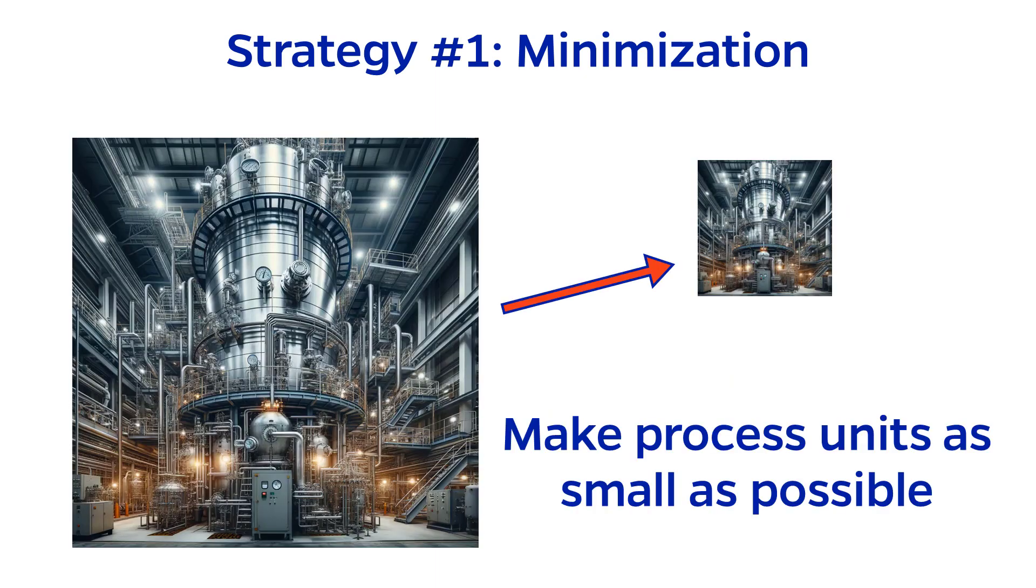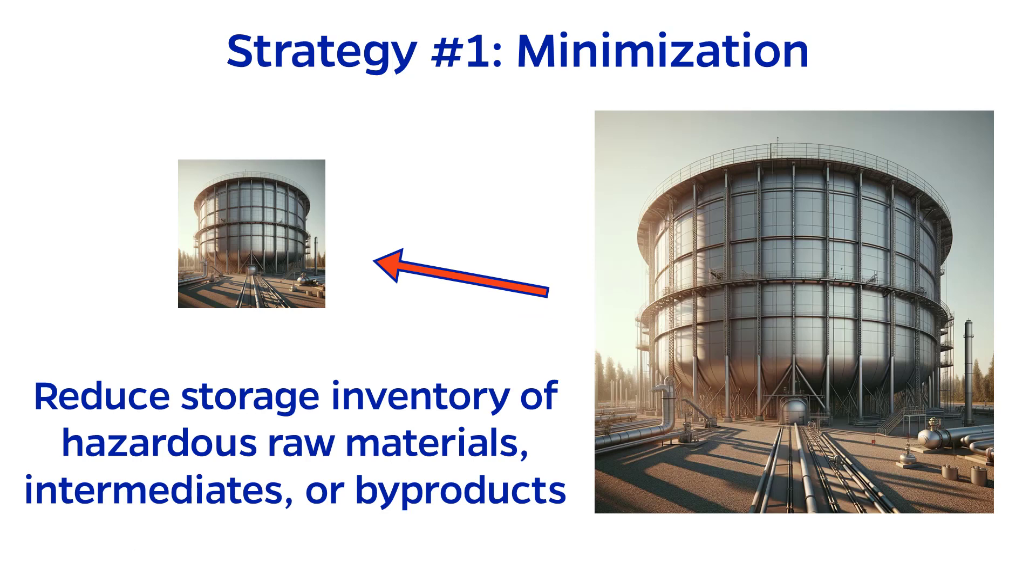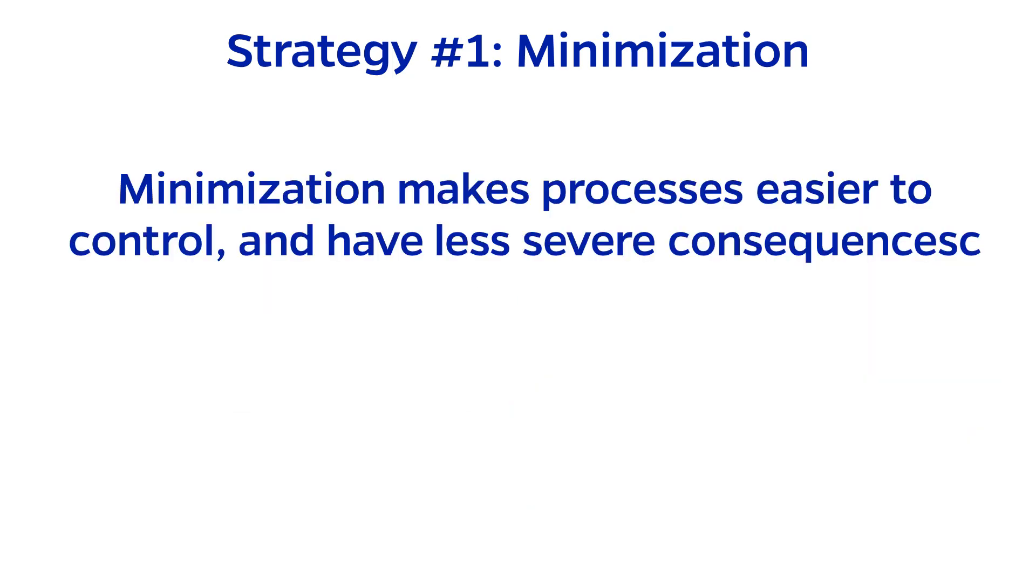The first strategy is minimization. This means making process units, like reactors, as small as possible, or reducing storage inventory of hazardous raw materials, intermediates, or byproducts. Minimization makes processes easier to control, and even in the case of an incident, consequences are less severe than a larger counterpart.